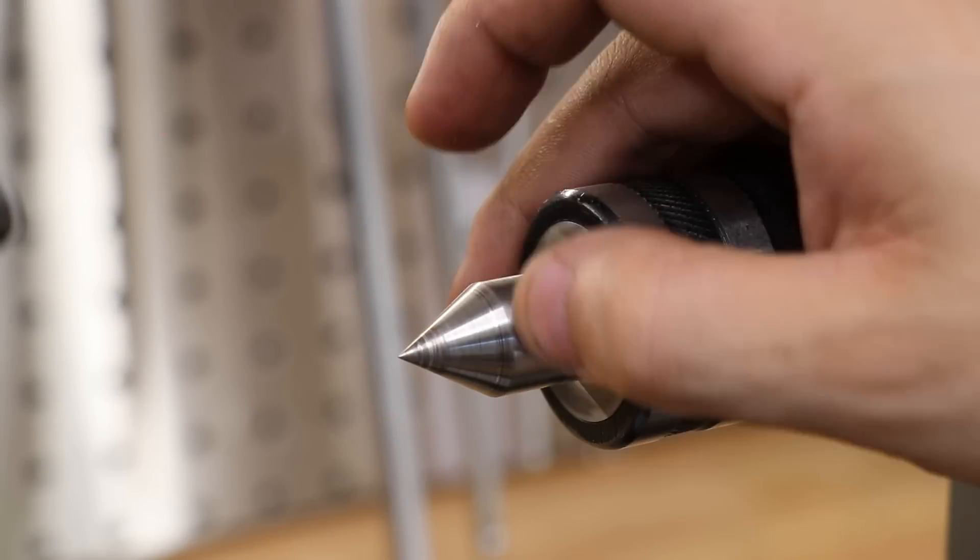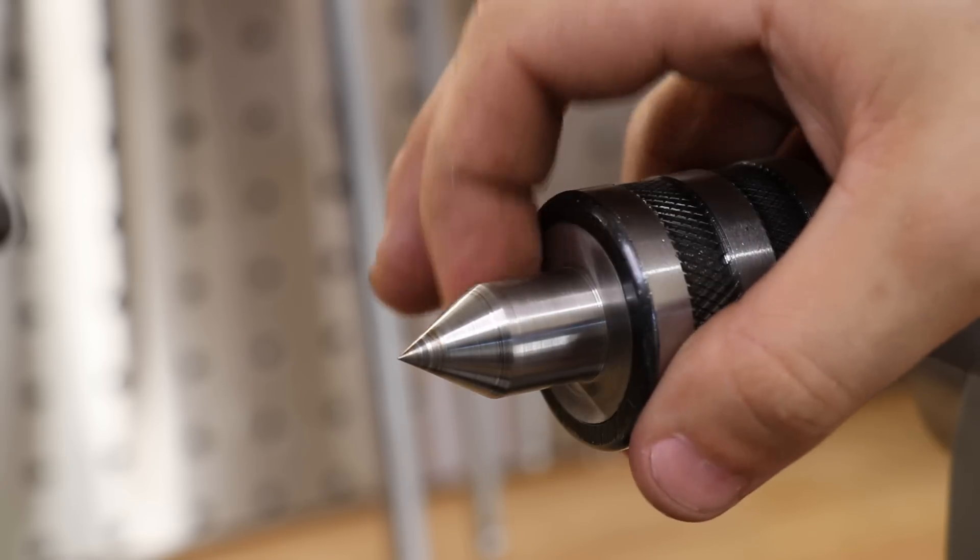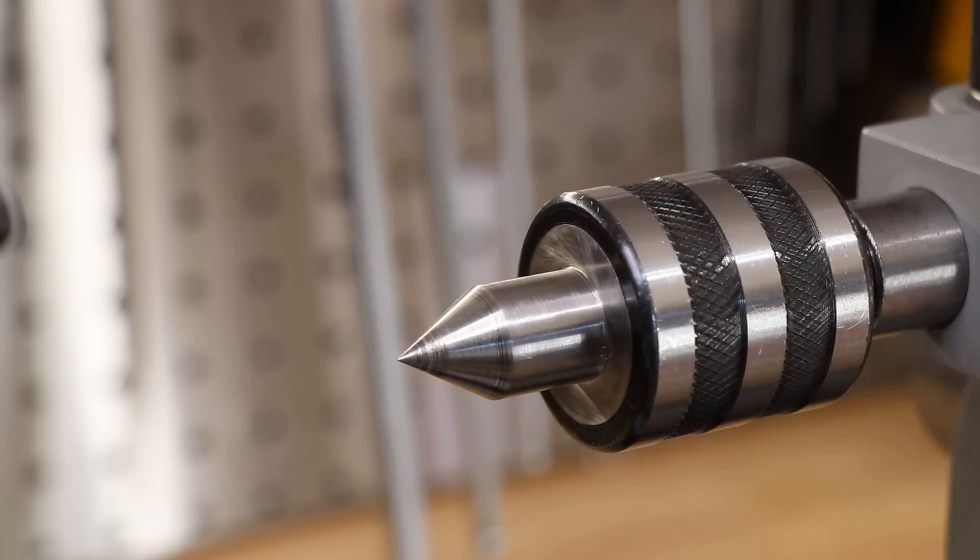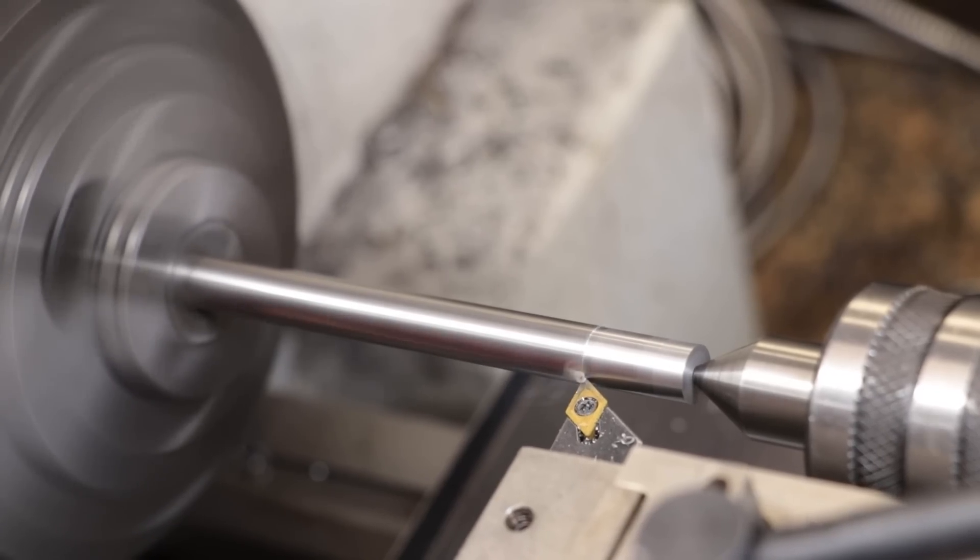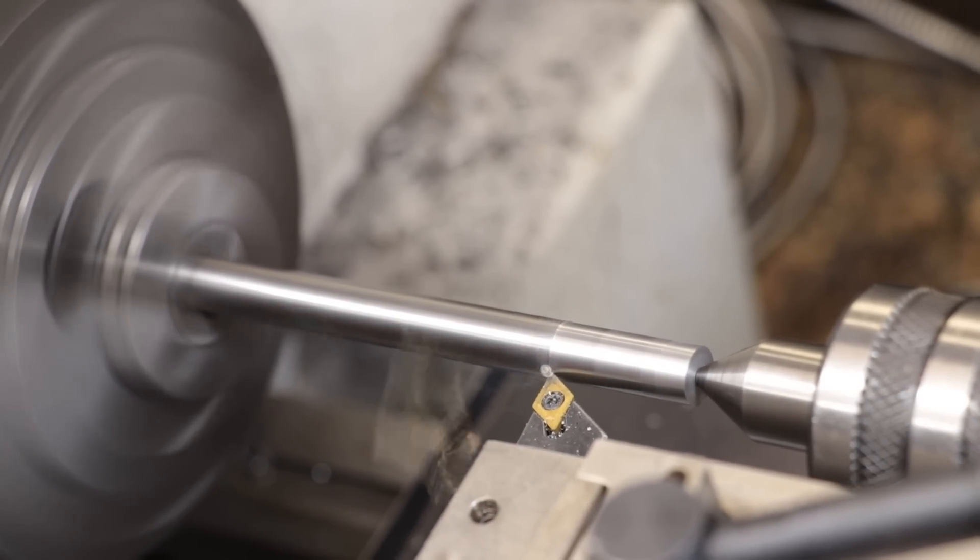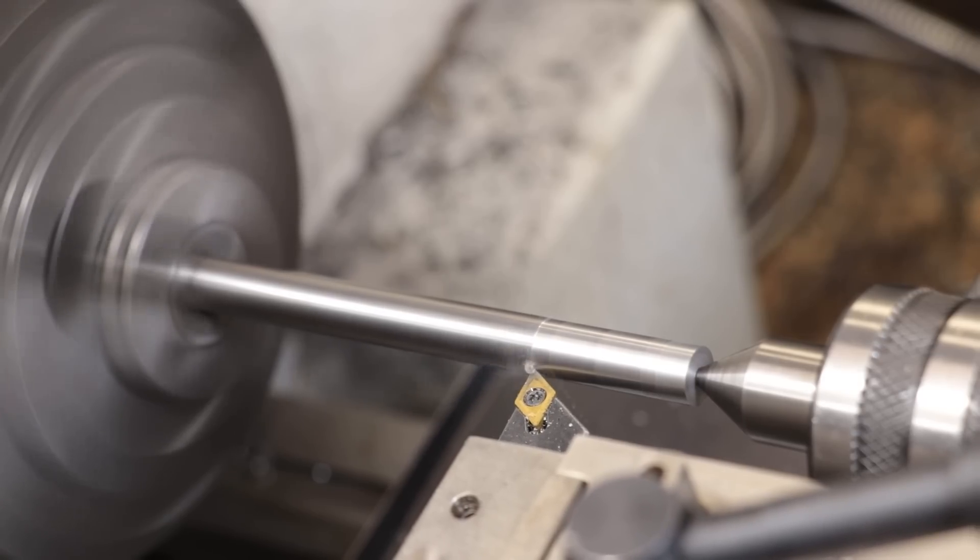Most of you are familiar with my live center. If not, it's essentially just a hardened steel cone pressed into a set of ball bearings. Its job is to provide end support for long pieces in the lathe. It keeps the part rigid and prevents it from deflecting away from the tool when I'm cutting.